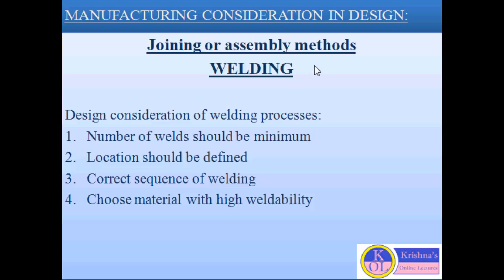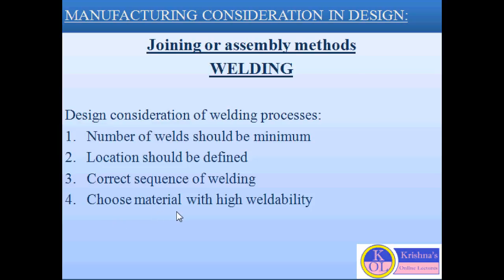Another process is the joining or assembling method — welding. Welding is one of the joining or assembly methods, and I am going to discuss the design considerations of welding processes. Whatever welding process is chosen, the first consideration is that the number of welds should be minimum. Second, the location of the weld should be properly defined. Third, the sequence of welding should be correct, especially for complex parts. And the last consideration — material with high weldability should be preferred, and the carbon content should be less in the component because it hardens the weld and results in cracks.